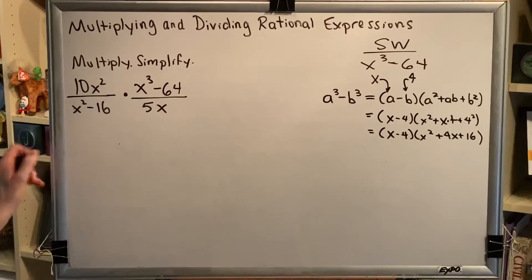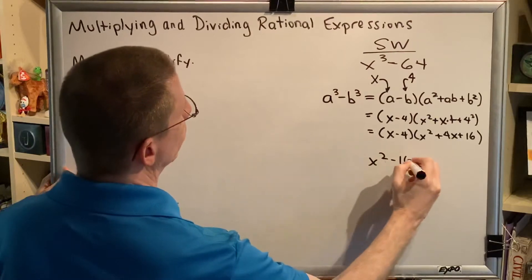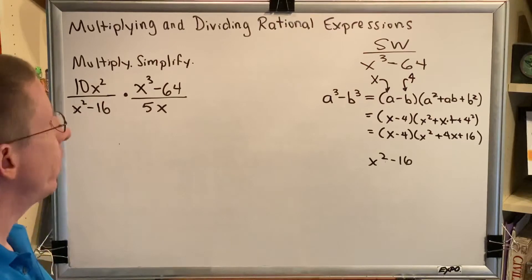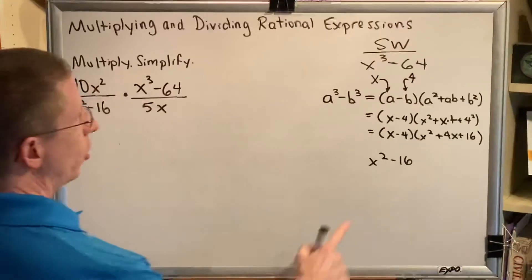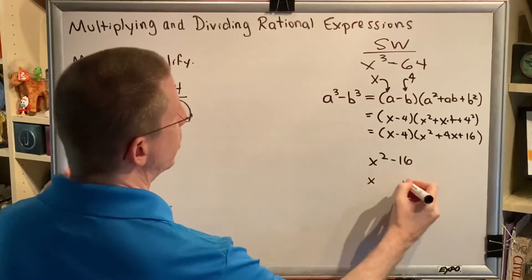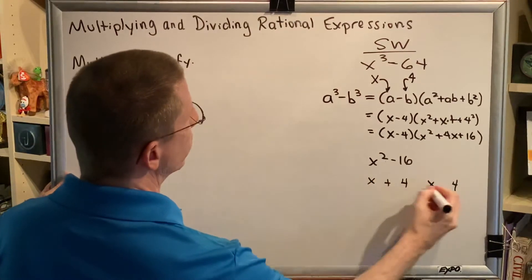Let's now turn our attention to x²-16. We are already in descending order. There's no GCF, and this is a difference of squares. The square root of x² is x. The square root of 16 is 4. And we're going to get (x+4)(x-4).